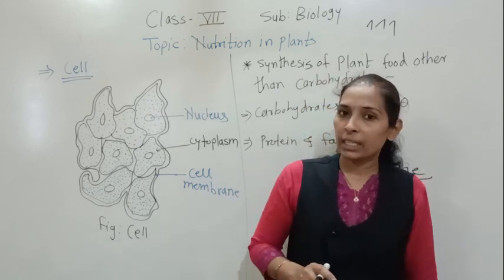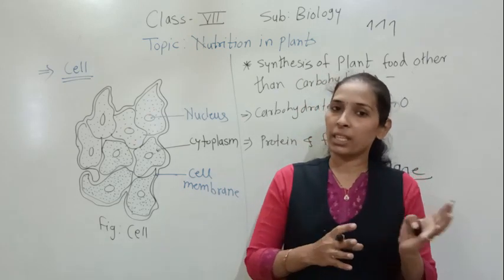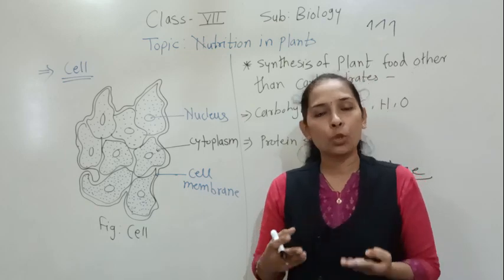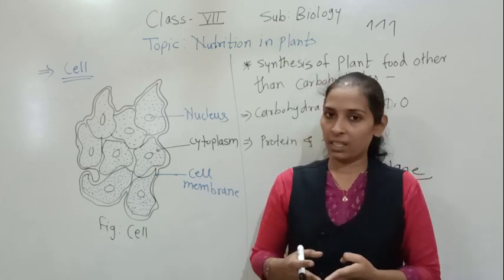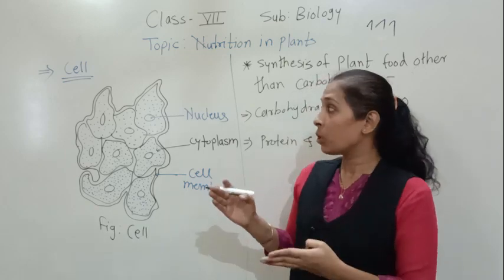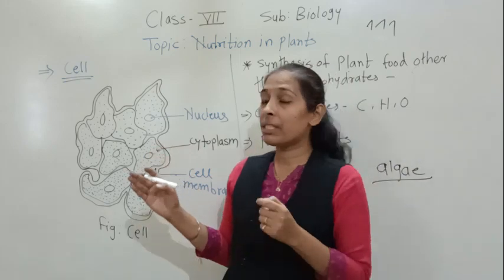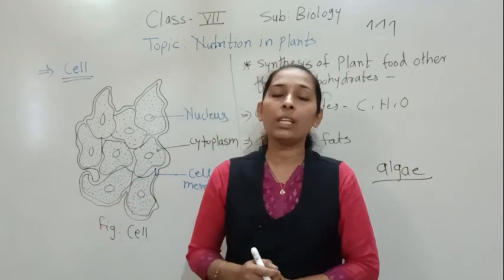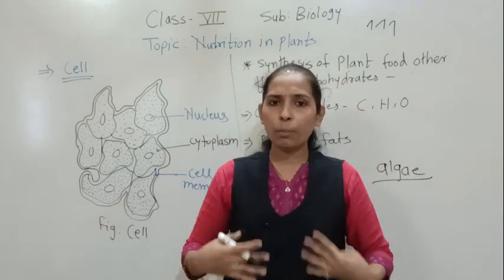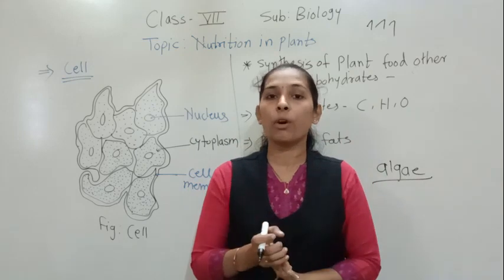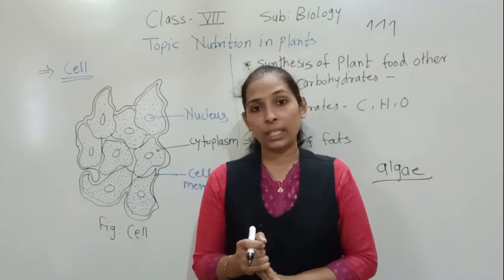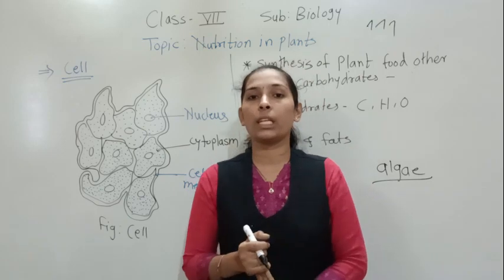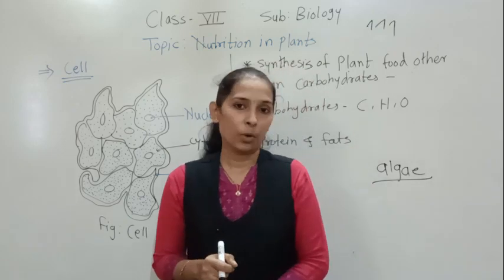Some organisms are having only one cell in their body and some are having so many cells in their body. The cell is the tiny unit of a living organism — the whole body is made up of cells, and because of the cell, they have proper structure and proper functions going on in their body.